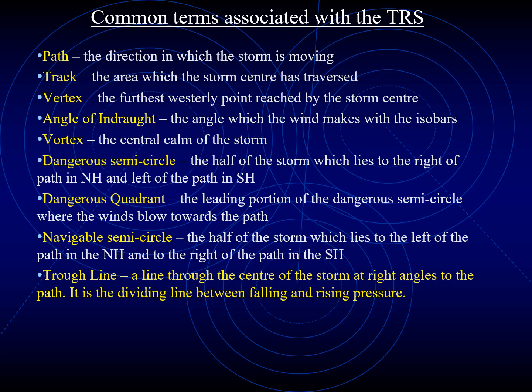Some of the common terms associated with the TRS include the path, which refers to the direction in which it is moving. The track is the area over which the storm center has traversed. The vertex is the furthest westerly point reached by the storm center. The angle of indraft is the angle which the wind makes with the isobars. The vortex is the central calm of the storm. Make sure you note the difference between vertex and vortex.